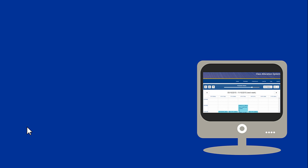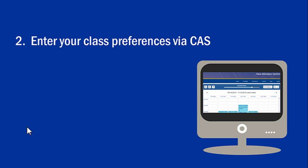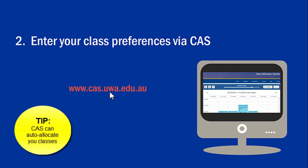Next, it's time to enter your class preferences for your units in the Class Allocation System, or CAS. Alternatively, if you don't mind which class times and days you get, you can choose to do nothing and CAS will allocate you classes according to the best timetable fit. If you prefer auto-allocation, skip ahead now.